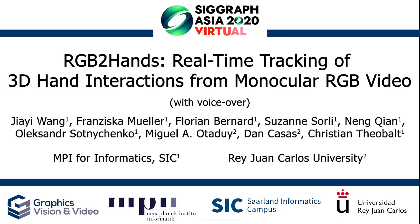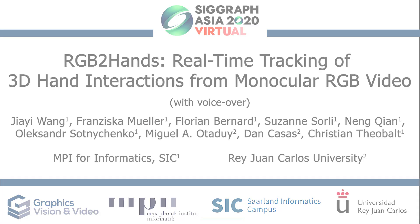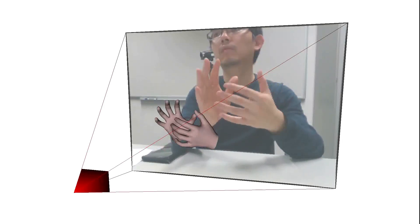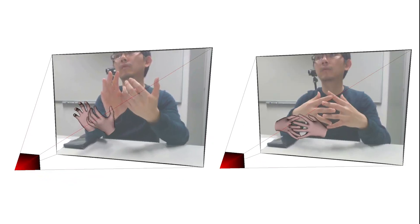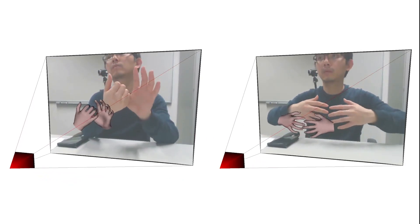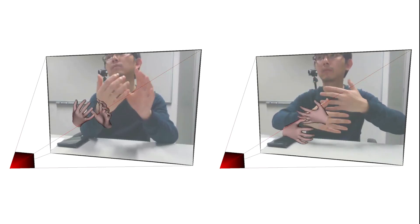We present the first method for tracking and reconstructing the 3D pose and geometry of two interacting hands from monocular RGB videos in real time. Our method obtains global 3D estimates and works well in challenging scenarios where one hand is heavily occluded by the other one.